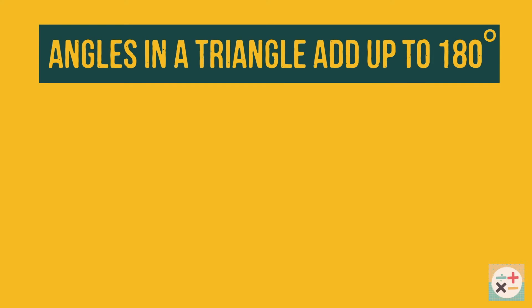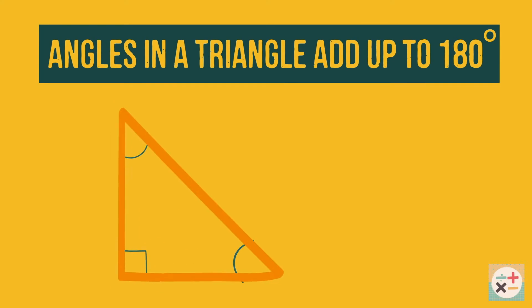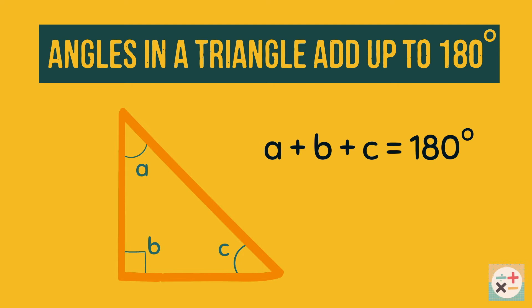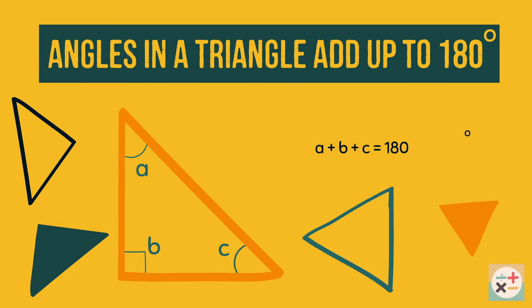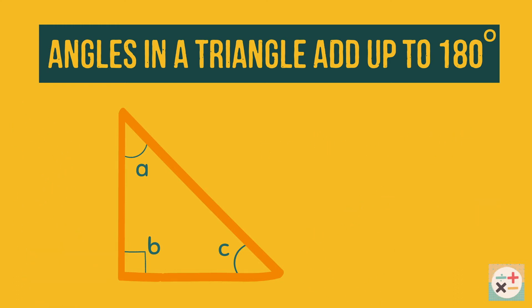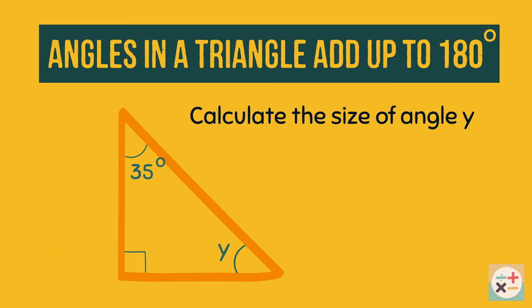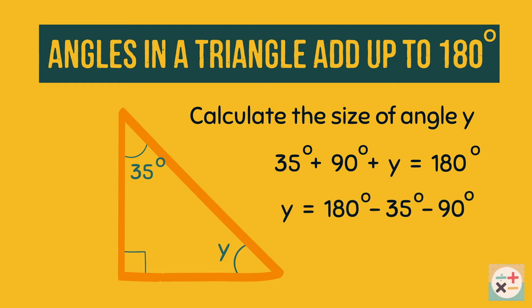The first of these rules to remember is that angles in a triangle add up to 180 degrees. This is true for any triangle. We can use this fact to work out problems similar to this where we have to find the missing angle. Rearranging the equation will give us the answer.